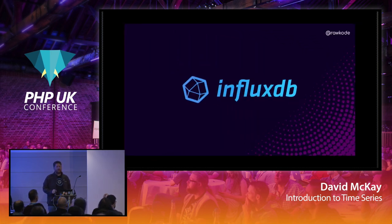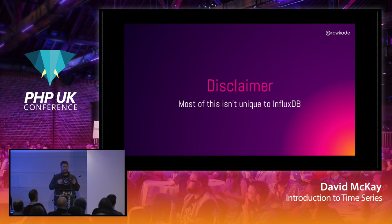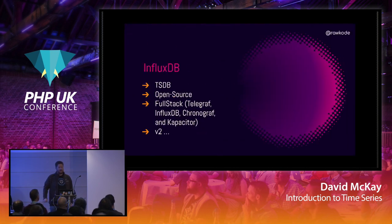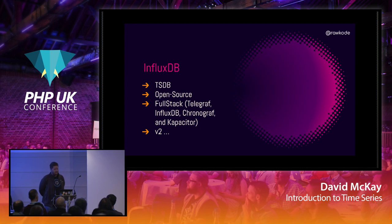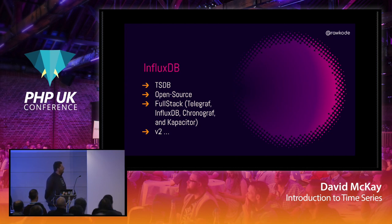Now some examples with InfluxDB — remember, it's agnostic. InfluxDB is a time series database, and everything from InfluxData is open source. We have a full-stack time series offering: Telegraf for collecting metrics, Chronograf for visualization and dashboarding — or Grafana if you're already comfortable with that — and Kapacitor for real-time streaming and anomaly detection on top of your time series data.